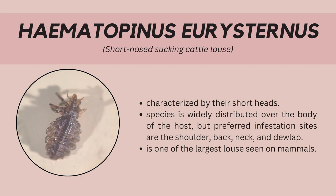The first louse in this video is the short-nosed sucking cattle louse, or Haematopinus eurysternus. Cattle have many lice species that parasitize them, which makes differentiation of different species of utmost importance. Haematopinus eurysternus, or the short-nosed cattle louse, is characterized by its short head. The species is widely distributed over the body of the host, but preferred infestation sites are the shoulder, back, neck, and jowl. To differentiate it from other sucking lice, the shape of the mouthpart is to be observed. It is one of the largest lice currently seen on mammals, at around 4mm in length.